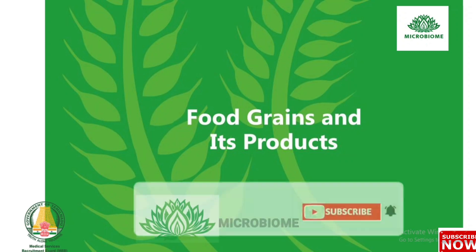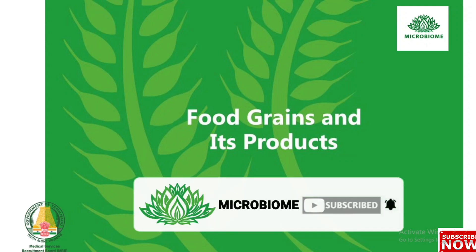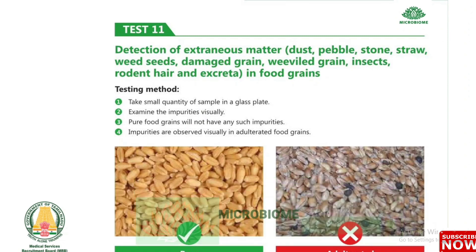Next, about food grains and their products. Test 11: Detection of extraneous matter — dust, pebbles, stones, straw, wheat seeds, damaged grain, weeviled grain, insects, rodent hair and excreta — in food grains. Take a small quantity of sample in a glass plate and examine the impurities visually. Pure food grains will have no such impurities, while impurities are observed visually in adulterated food grains.